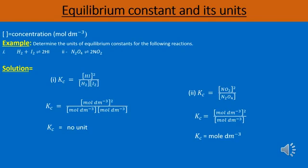In the first step, we will write the equilibrium constant expression Kc. Kc is equal to the concentration of hydrogen iodide